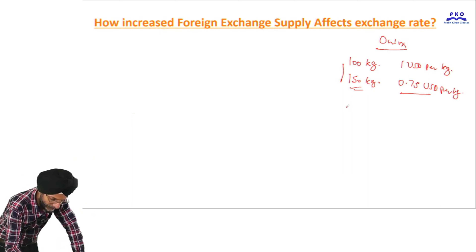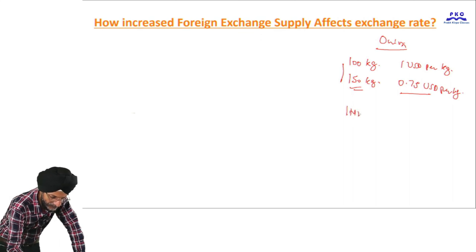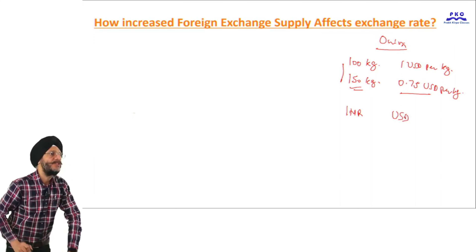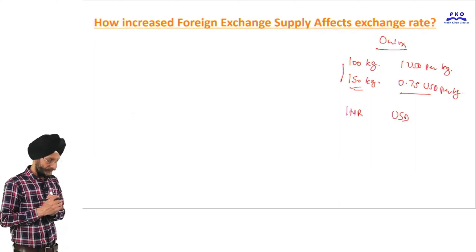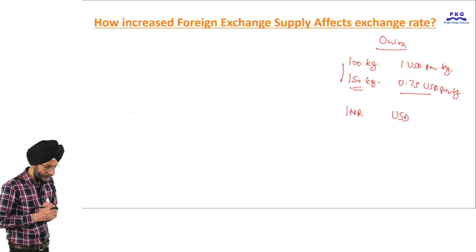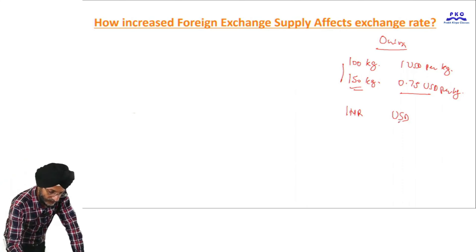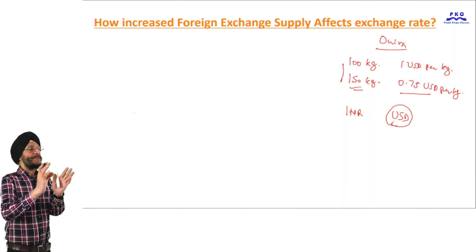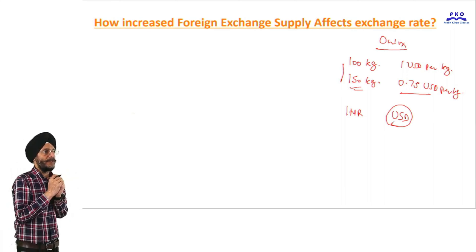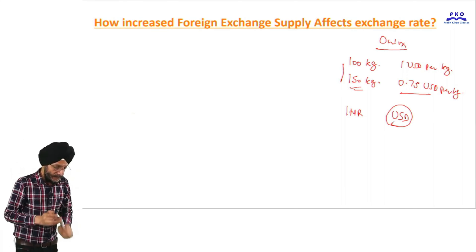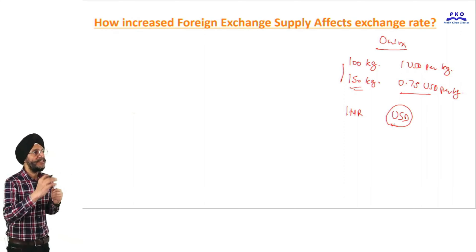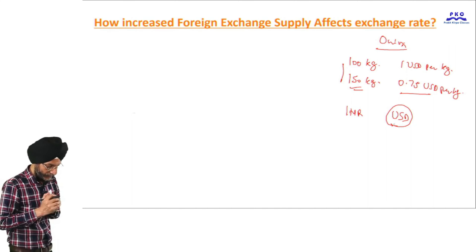Suppose we are in India, where the currency is the Indian rupee, and the other country is the US, where the currency is the US dollar. The US dollar is foreign currency for us. What are the reasons that there may be an increase in foreign exchange supply?